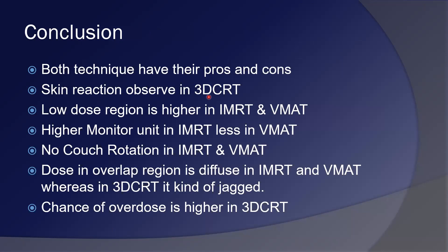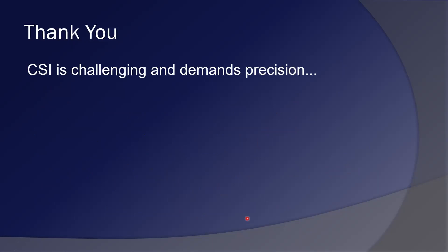In conclusion, both techniques have their pros and cons. Skin reactions are observed in 3D CRT. The low-dose region is higher in IMRT and VMAT. Monitor units are higher in IMRT and less in VMAT. No couch rotation is required in IMRT and VMAT — that is a big advantage as it saves time for the radiotherapist. Dose in the overlap region is diffuse in IMRT and VMAT, whereas in 3D CRT it is concentrated, making the chance of overdose higher in 3D CRT. CSI is challenging and demands precision — you must be expert while doing these sophisticated plans, as patient protection is the first priority of the planner. Thank you very much.